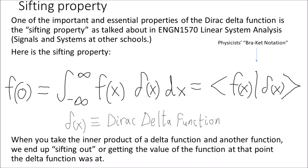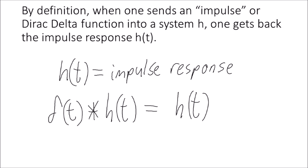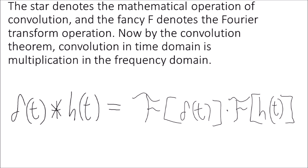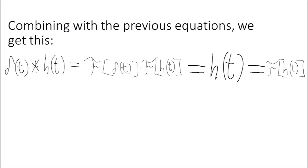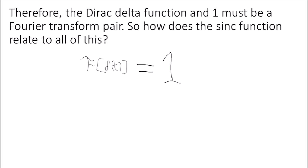One of the important and essential properties of the Dirac delta function is the sifting property, as discussed in Linear System Analysis (or Signals and Systems at other schools). When you take the inner product of a delta function and another function, you end up sifting out the value of the function at the point where the delta function is located. Electrical engineers define the impulse response of a linear time invariant system by utilizing the convolution operation and the sifting property of the delta function. When one sends an impulse or Dirac delta function into a system h, one gets back the impulse response h. The star denotes convolution and the fancy f denotes the Fourier transform operation.